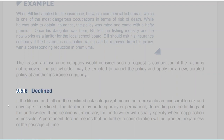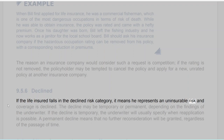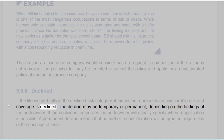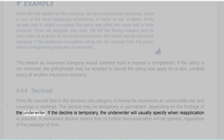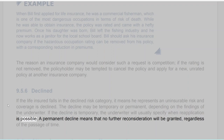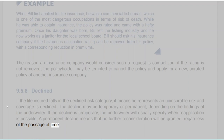Section 9.5.6: Declined. If the life insured falls in the declined risk category, it means he represents an uninsurable risk and coverage is declined. The decline may be temporary or permanent, depending on the findings of the underwriter. If the decline is temporary, the underwriter will usually specify when reapplication is possible. A permanent decline means that no further reconsideration will be granted, regardless of the passage of time.